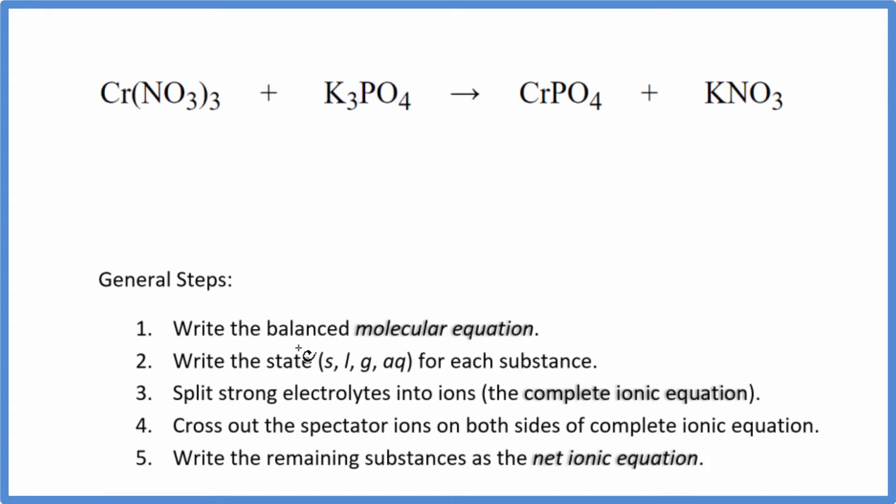The first thing we need to do is balance the molecular equation. There are three potassium atoms here and just one here. Let's put a three in front of the KNO3. That'll give us three potassiums. We also have three nitrate ions. That's good. We have three over here. Then we have chromium here and here, phosphate here and here. So this is the balanced molecular equation.